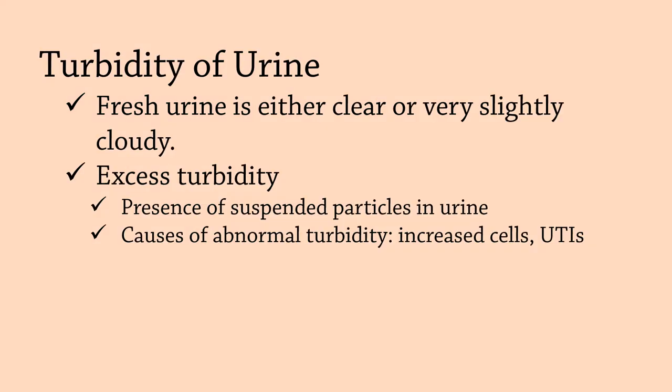The turbidity of the urine sample is gauged subjectively and reported as clear, slightly cloudy, cloudy, opaque, or flocculent. Fresh urine is either clear or very slightly cloudy. Excess turbidity results from the presence of suspended particles in the urine, the cause of which can usually be determined by the results of the microscopic urine sediment examination.